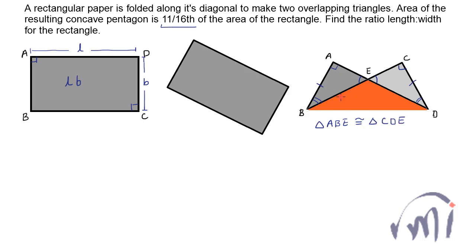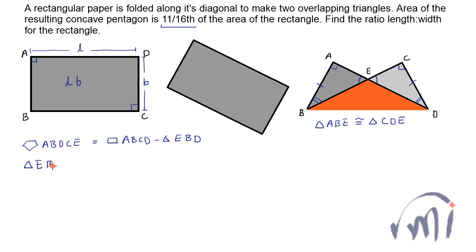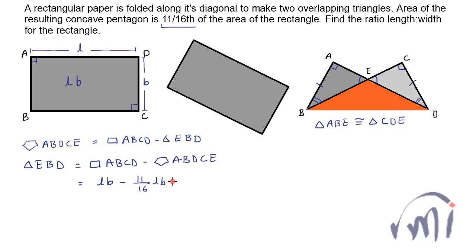It is given that the area of this pentagon is 11/16th of the area of the rectangle. That means the area of pentagon A, B, D, C, E is actually equal to the area of rectangle A, B, C, D minus the area of triangle E, B, D, because the portion of the rectangle which is exactly below triangle E, B, D is not getting counted in the area of the pentagon. So the area of triangle E, B, D equals L·b minus 11/16 of L·b, which gives 5/16 of L·b.